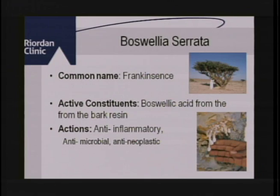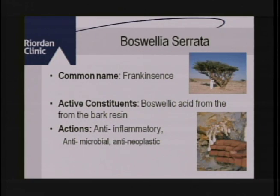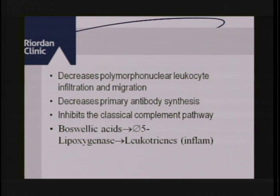Next is Boswellia — commonly known as frankincense, one of the gifts the three wise men brought — it comes from the bark of the Boswellia tree. It's anti-inflammatory, anti-microbial, and anti-neoplastic, meaning it's shown to help kill cancer cells. What it does is decrease inflammatory cytokines and inhibit the LOX enzyme that Dr. Ron talked about earlier. Omega-3 fatty acids also came up earlier — our diets are way higher in omega-6. You need some omega-6 for clotting, but you want to balance it out with omega-3.